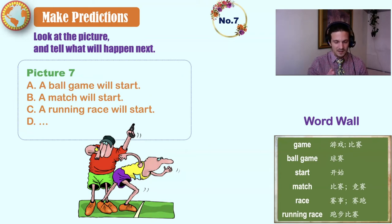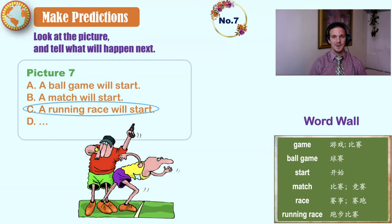I see a man leaning over like he's ready to run and a white line that might be the start line, a gun to say go, and a watch to time. This is no ball game or match. A running race is about to begin.